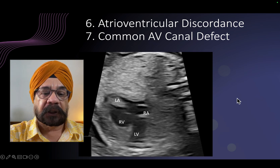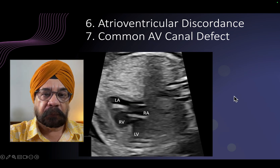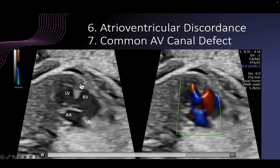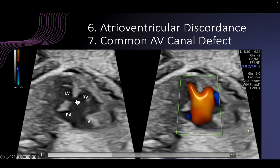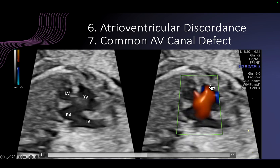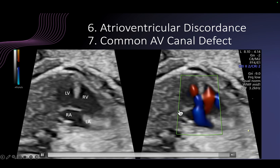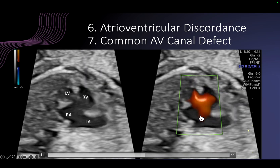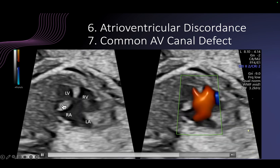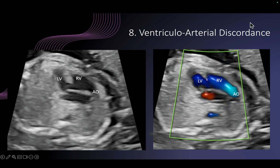Apart from that, we have to describe the AV junction. The AV valve is a single AV valve — this is a common AV canal defect, where you see the interventricular septal defect and the large common AV valve. Color Doppler shows the right ventricle is larger and the flow in the right ventricle is more, indicating a slight imbalance in the AV canal defect. You see the regurgitation right in the middle — central regurgitation — a hallmark of common AV canal defect.